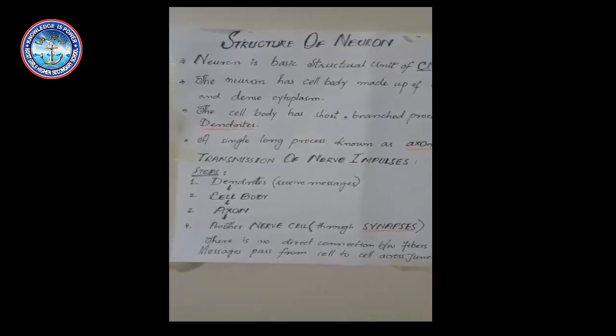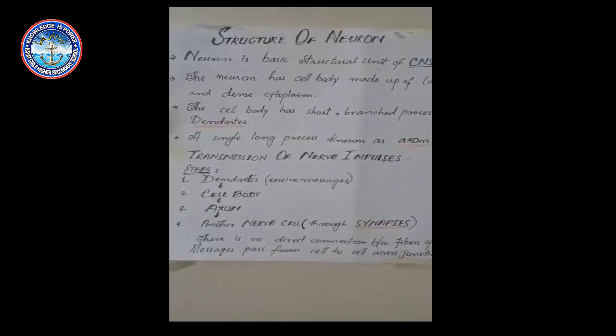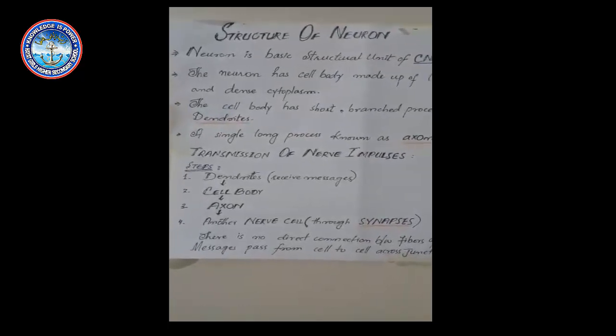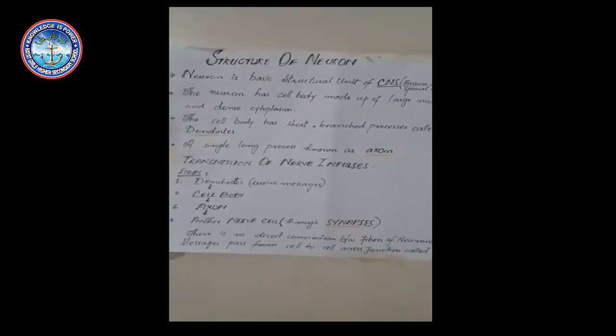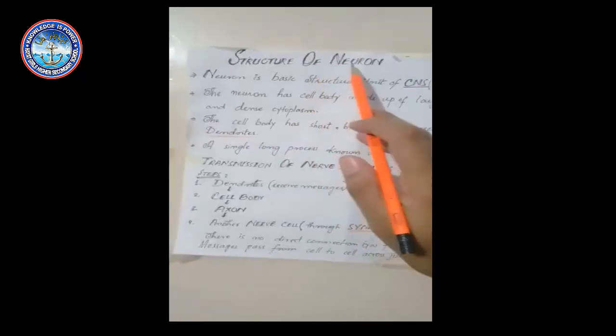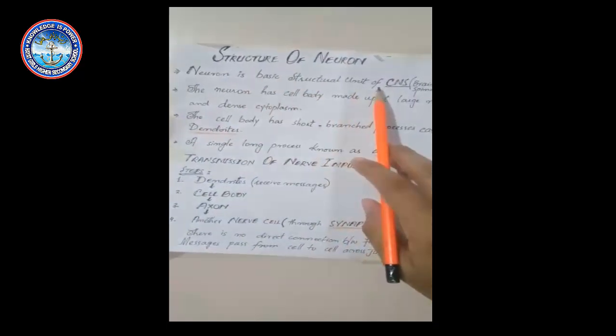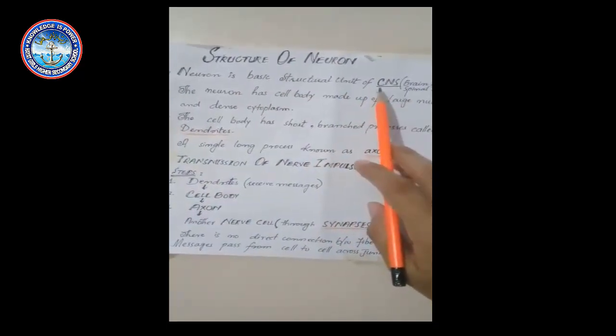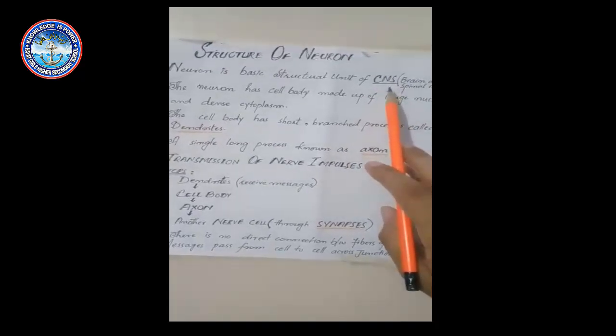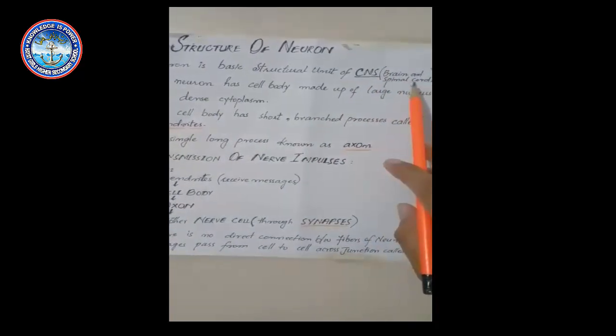Assalamualaikum dear students. Today we are going to discuss the structure of a neuron. The question arises: what is a neuron? Neuron is the basic structural unit of CNS. The CNS stands for central nervous system, that includes brain and spinal cord both.